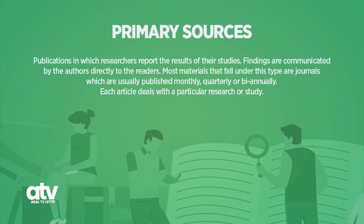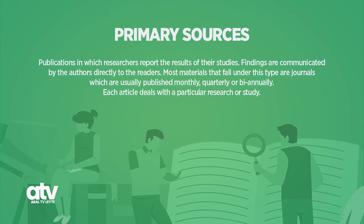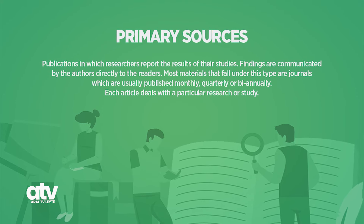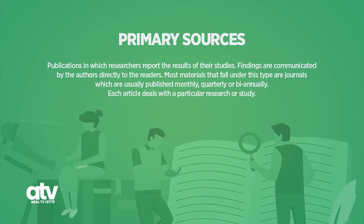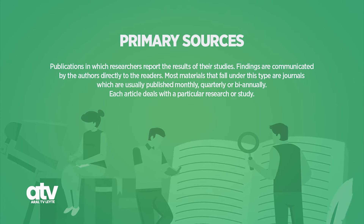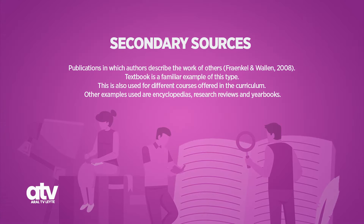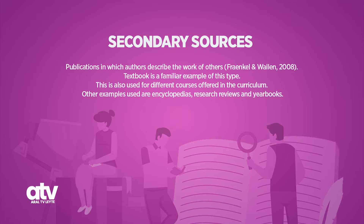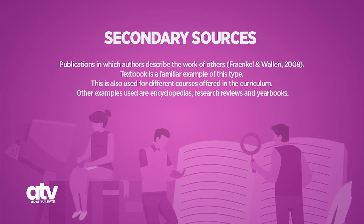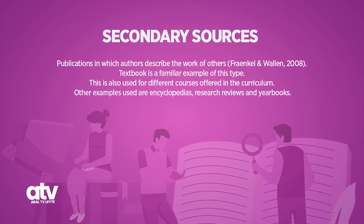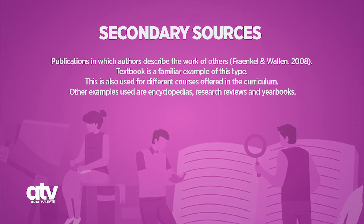The other element in selecting relevant materials for the literature review is the types of sources with which you have to be familiar. Primary sources are publications in which researchers report the results of their studies; findings are communicated by the authors directly to the readers. Most materials that fall under this type are journals, usually published monthly, quarterly, or biannually, where each article deals with a particular research or study. Secondary sources are publications in which authors describe the work of others. A textbook is a familiar example; other examples are encyclopedias, research reviews, and yearbooks.